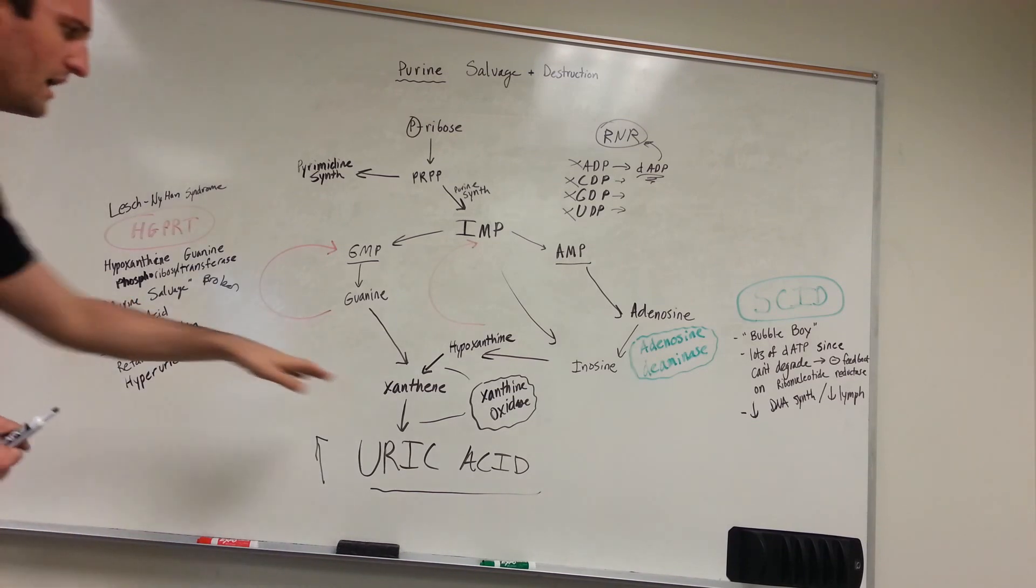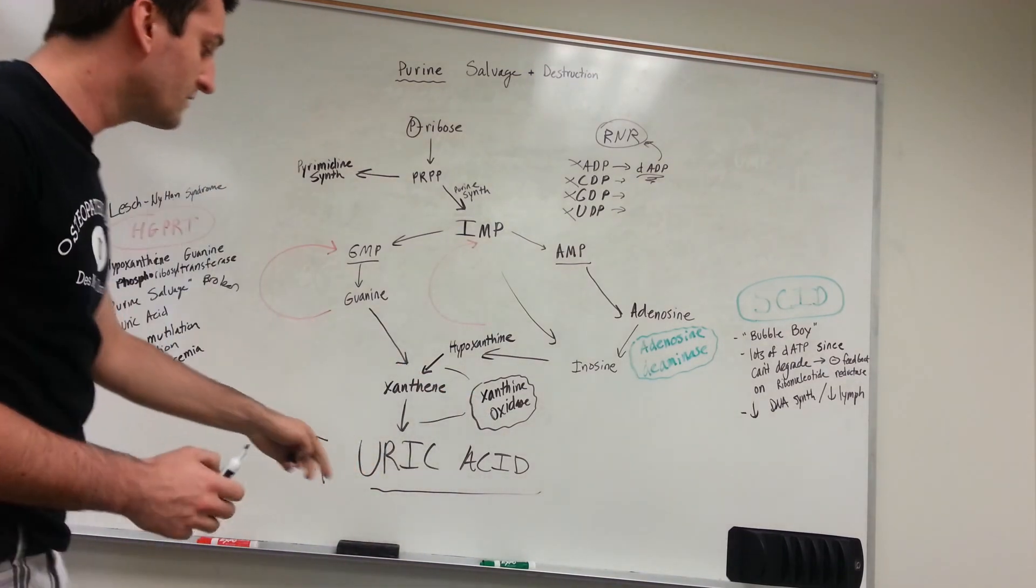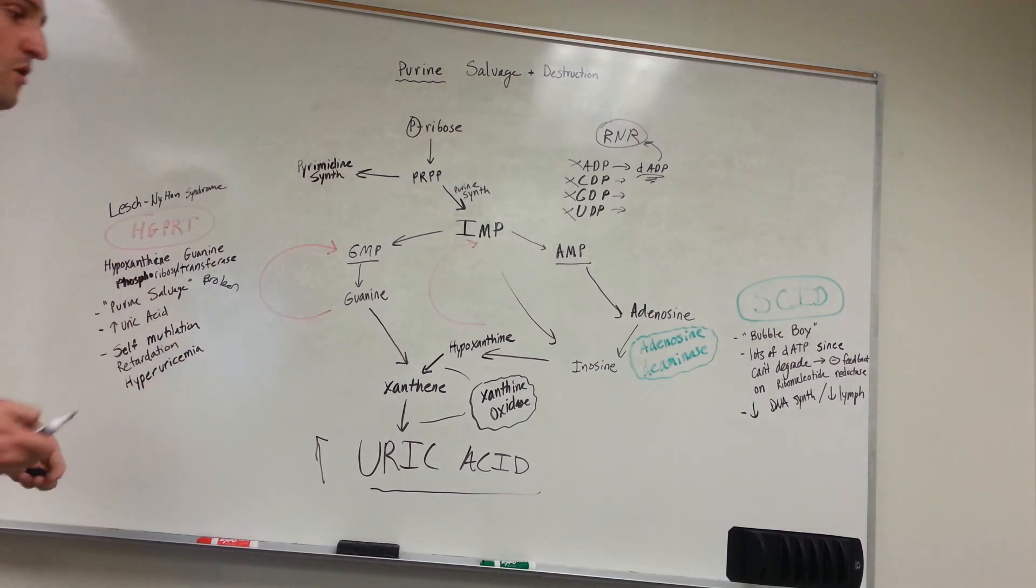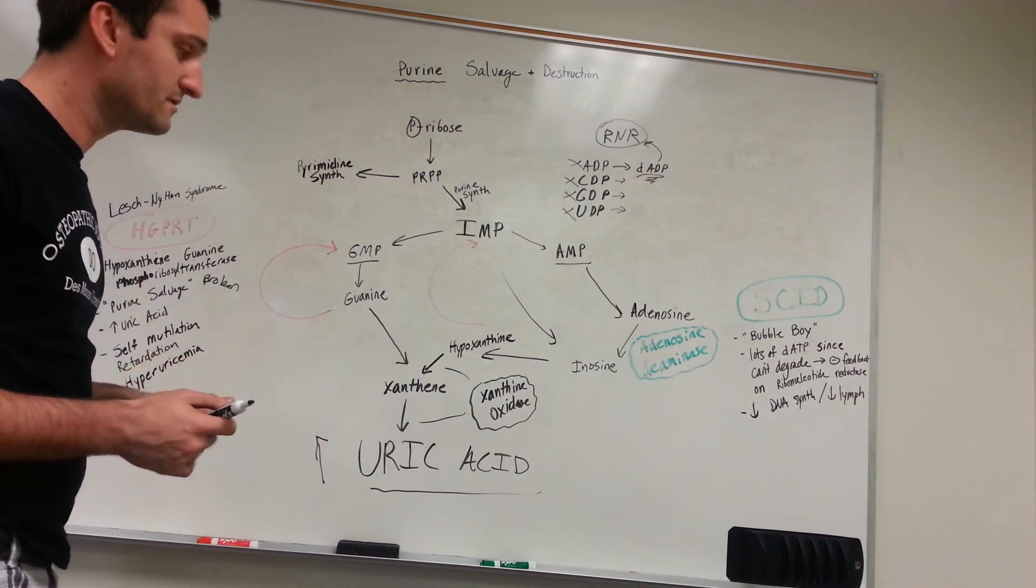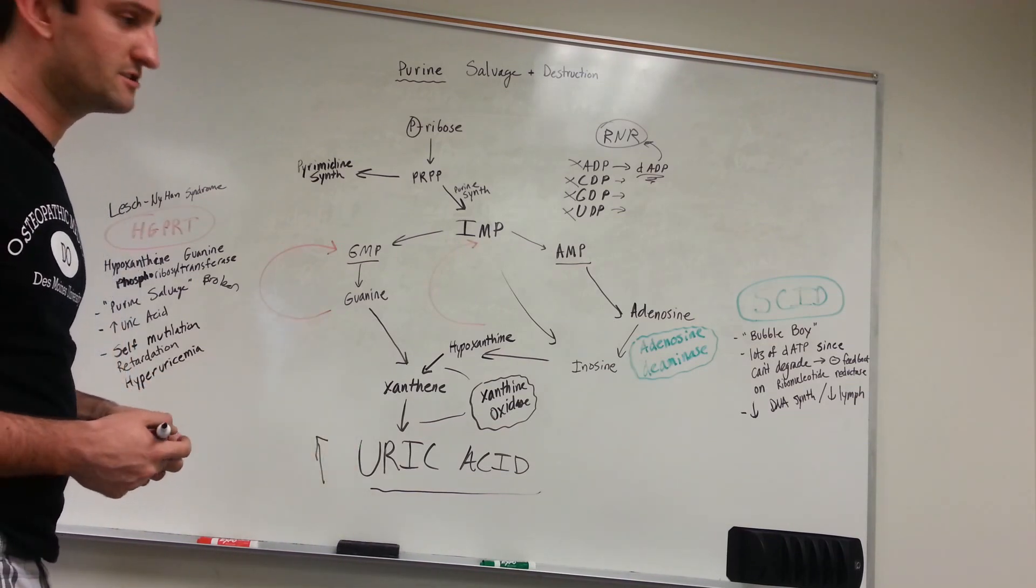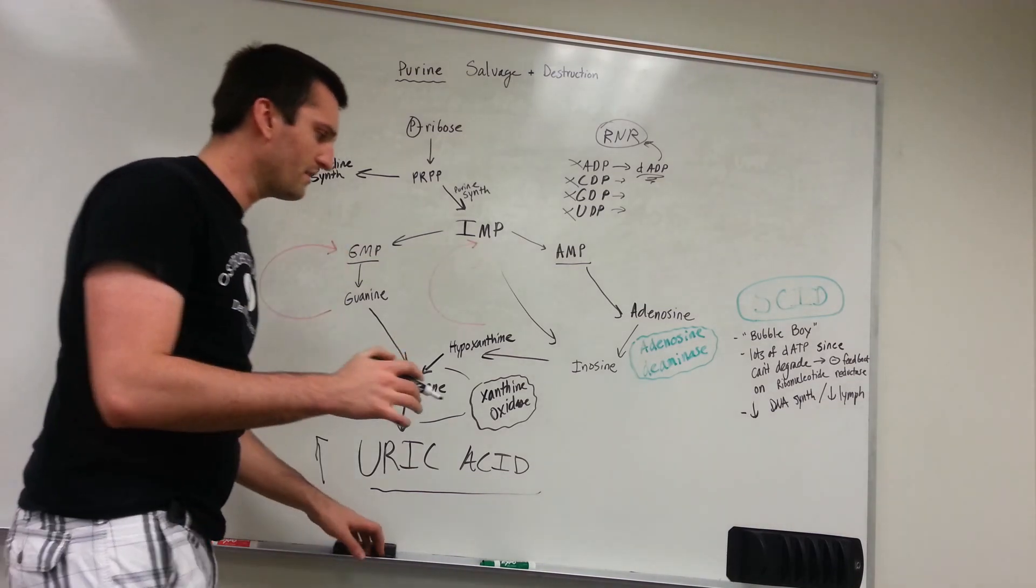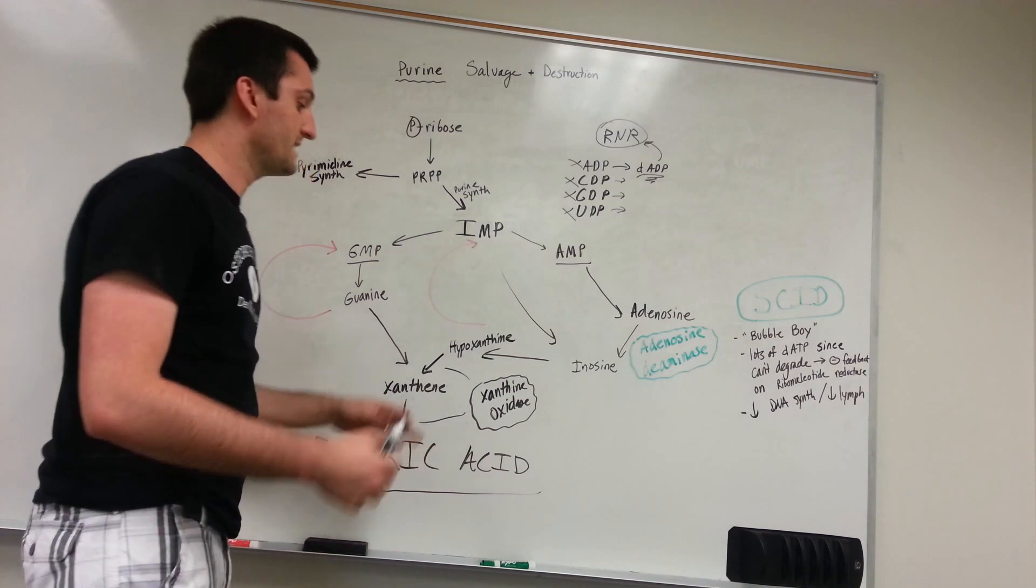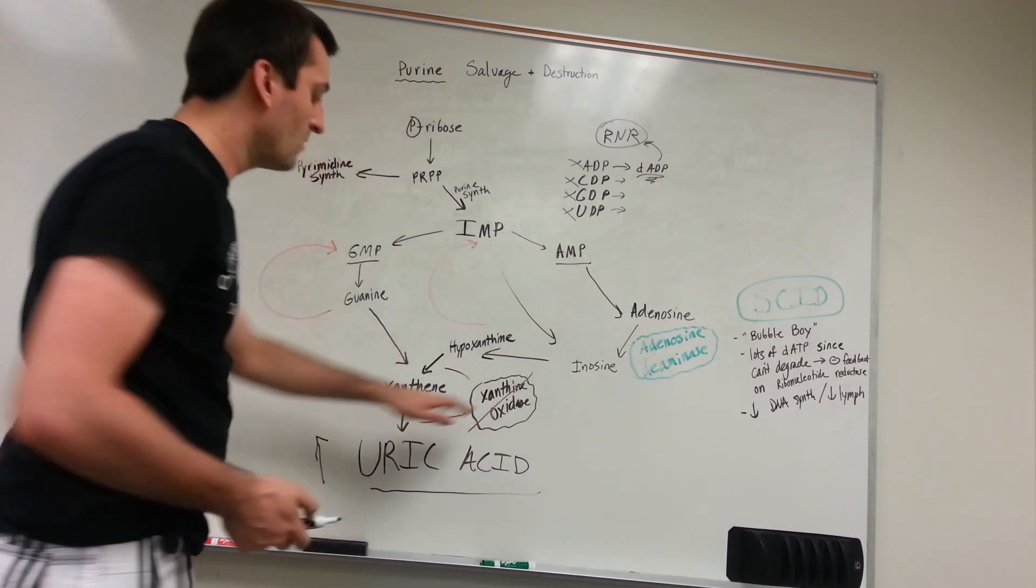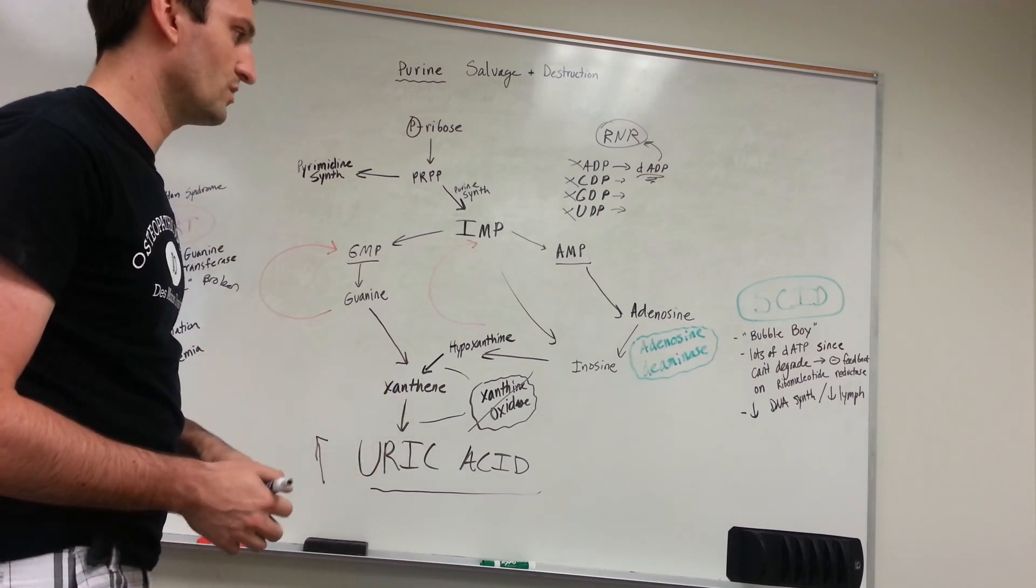Also, I do want to point out that xanthine oxidase is inhibited by allopurinol. So if you have increased uric acid levels, such as in Lesch-Nyhan syndrome or in gout—gout is where you have uric crystals that build up in your joints and those crystals cause harm and destruction to those joints and intense pain, typically the big toe—one of the first drugs that you're going to be given is allopurinol. And allopurinol knocks out this enzyme. When you knock out that enzyme, you cannot make uric acid, and that cannot accumulate in joints.